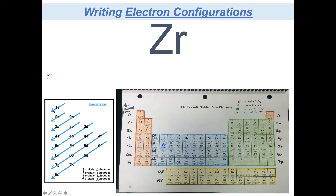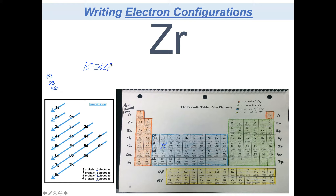We will always start with 1s. With 40 electrons to fill, we're going to put 2 in there: 1s2. S's can only ever hold 2, taking me down to 38 electrons. After 1s comes 2s — S again can hold 2 electrons, subtracting from our total, down to 36. After 2s, we go to 2p. P can hold 6 electrons, and with 36 to go, I fill in all 6 electrons.